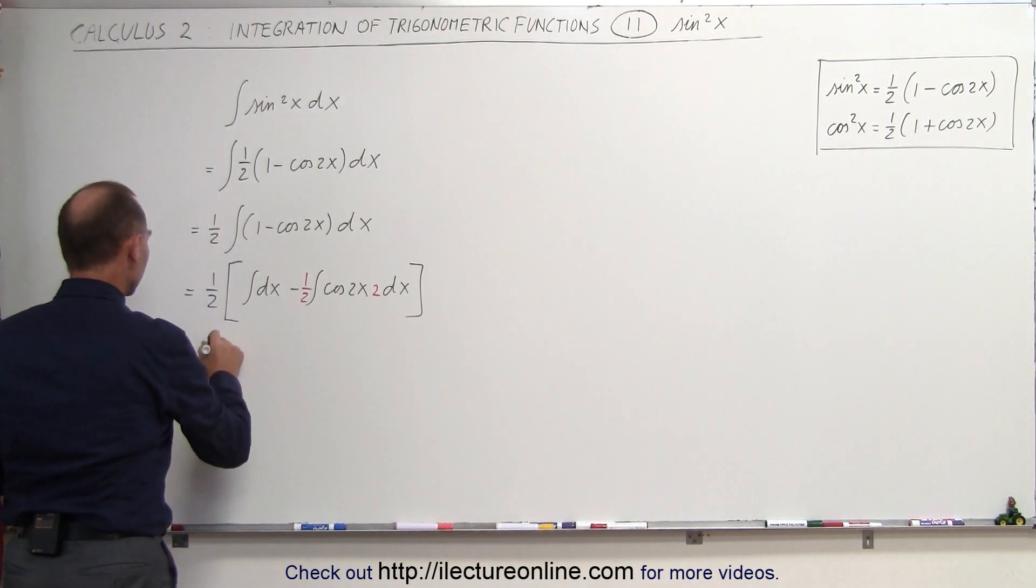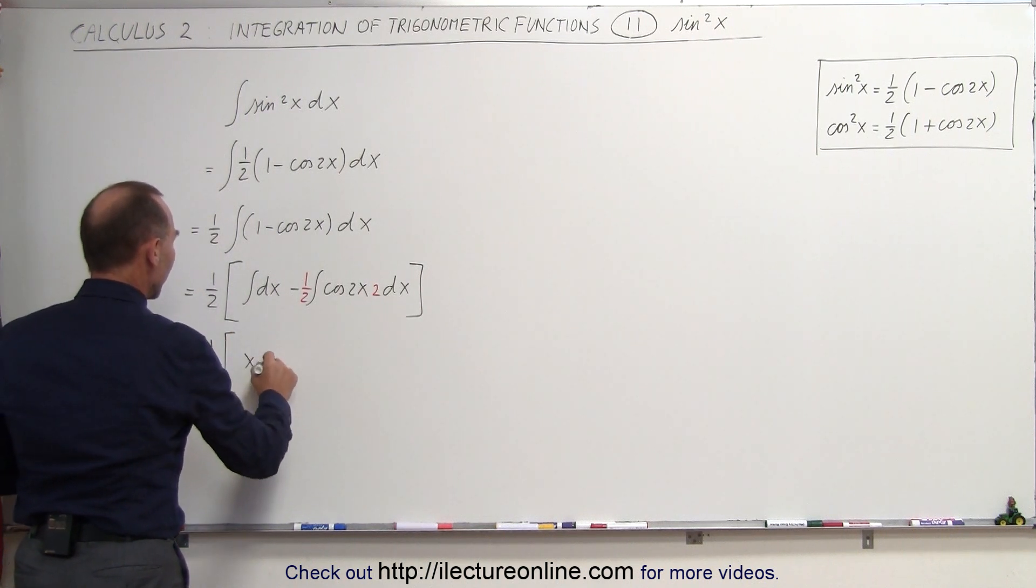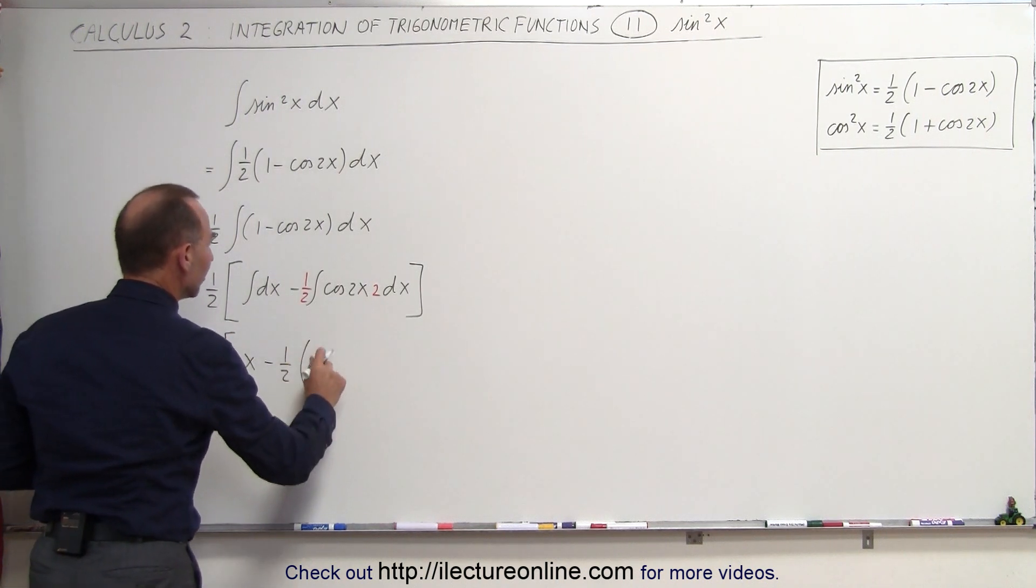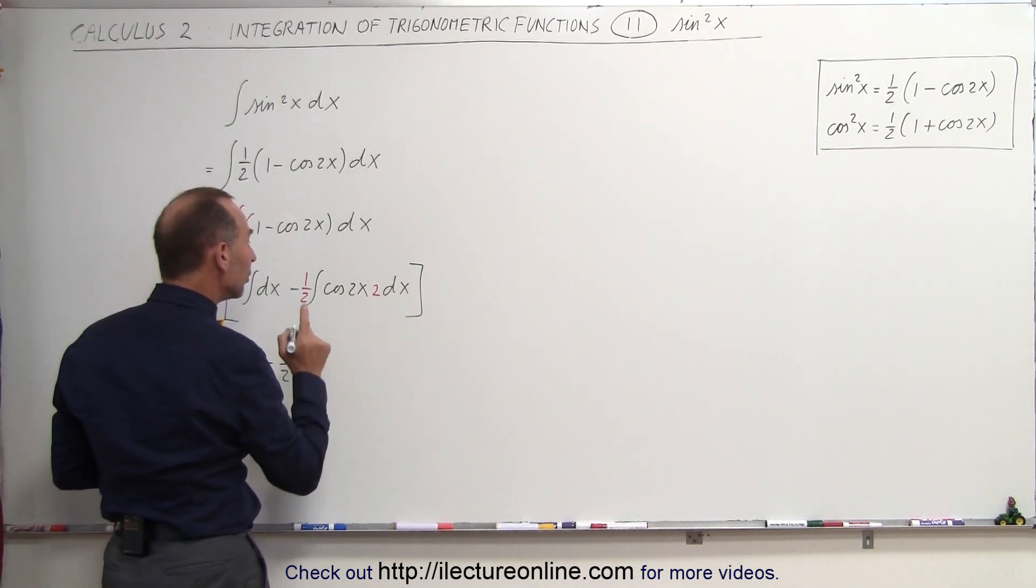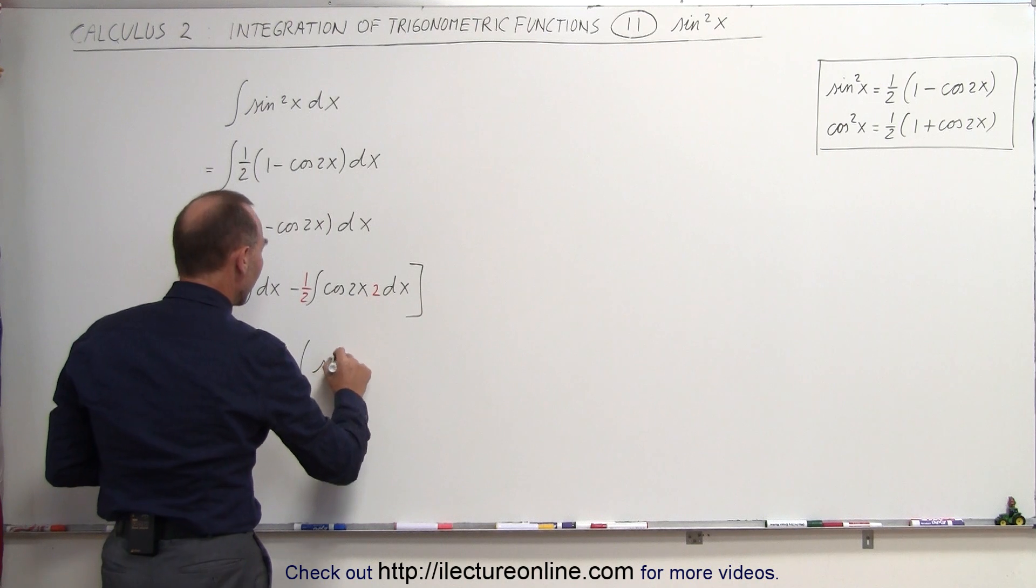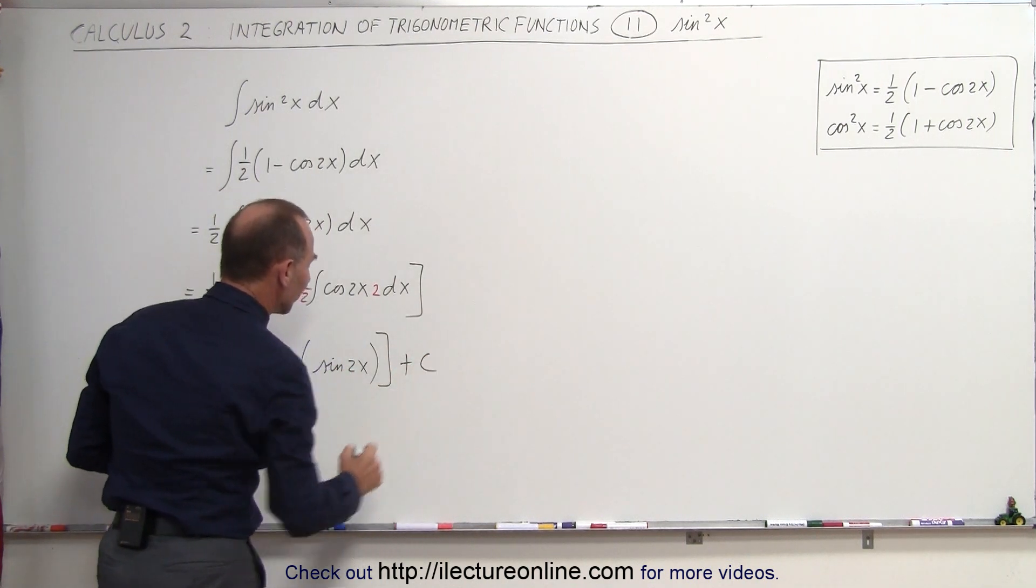Continuing on, this is equal to one-half times the integral of dx is x minus one-half times the integral of cosine 2x times 2 dx is equal to sine 2x. We can't forget the constant of integration.